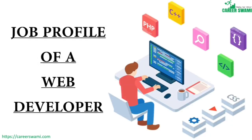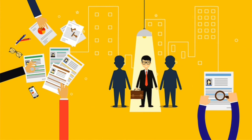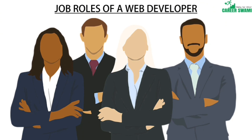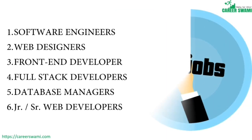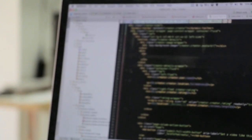The job profile of a web developer is divided into categories: job roles, responsibilities, and salary versus experience. There are majorly six types of job roles: software engineer, web designer, front-end developer, full stack developer, database manager, and junior or senior web developer. These categories may vary from person to person according to their position and knowledge, but these six are the major types.